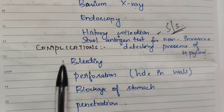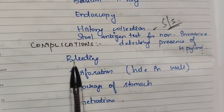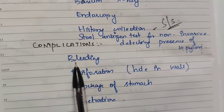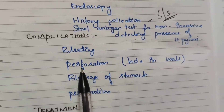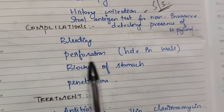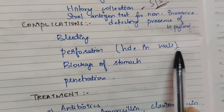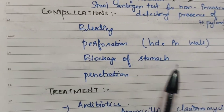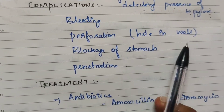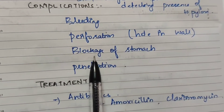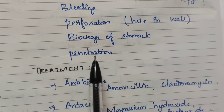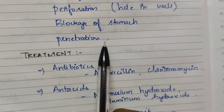Complications include GI bleeding, perforation — a hole in the wall — blockage of the stomach, and penetration.